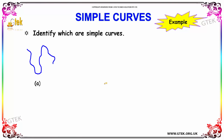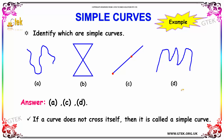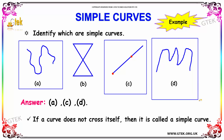Next, we have an example on simple curves. You have to identify which of the given images — A, B, C, or D — are simple curves. The answer is options A, C, and D. A curve has the condition that it does not cross itself, which is violated in option B. So options A, C, and D are the simple curves. A line is also a straight curve.